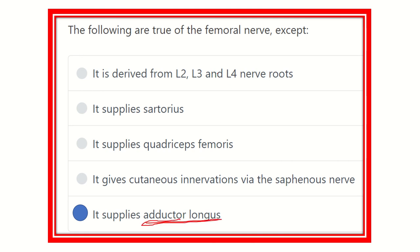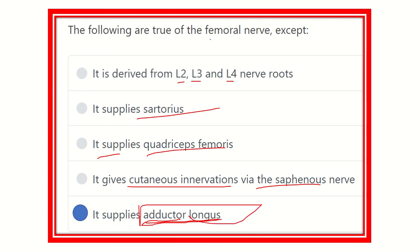It is supplied by the obturator nerve, not the femoral nerve. The other options are all true: the femoral nerve is derived from L2, L3, and L4; it supplies the sartorius, which is the longest muscle in the human body; it supplies the quadriceps femoris; and it gives cutaneous innervation via the saphenous nerve. So the false answer is that it supplies the adductor longus — this is not true regarding the femoral nerve. Thank you.